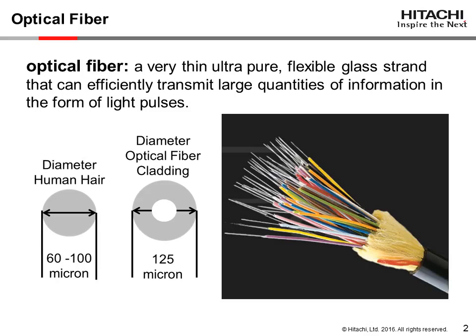Today, optical fiber can be defined as a very thin, ultra-pure, flexible glass strand that can efficiently transmit large quantities of information in the form of light pulses. The typical optical glass fiber has an outer diameter of 125 micron — 125 thousandths of a millimeter — about the same diameter as that of a human hair.